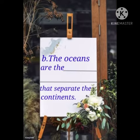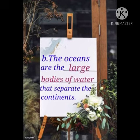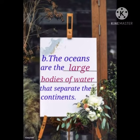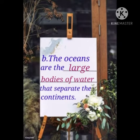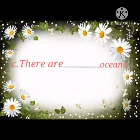Next is: the oceans are the dash that separate the continents. Write 'large bodies of water' in the blank. L-A-R-G-E, large. Then bodies, B-O-D-I-E-S. Then 'of'. Then water, W-A-T-E-R. The oceans are the large bodies of water that separate the continents.